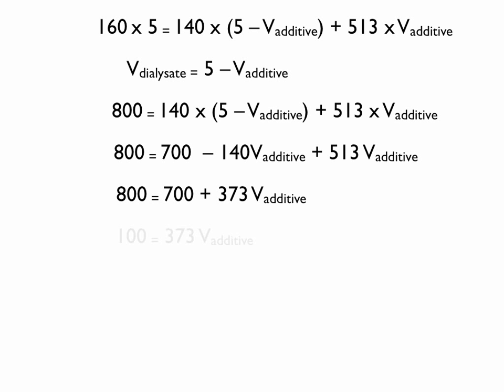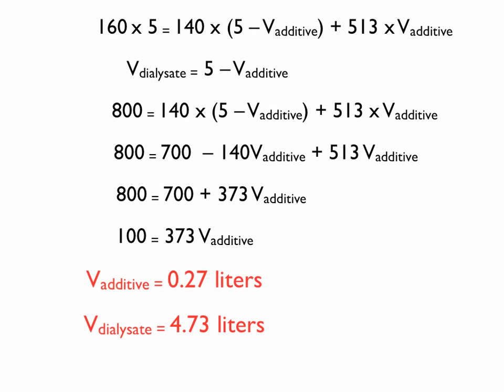We can solve for the volume of the additive. You take 100, divide it by 373, and you get 0.27 liters of 3% saline added to 4.73 liters of your dialysate to get a final sodium concentration of 160 milliequivalents per liter.